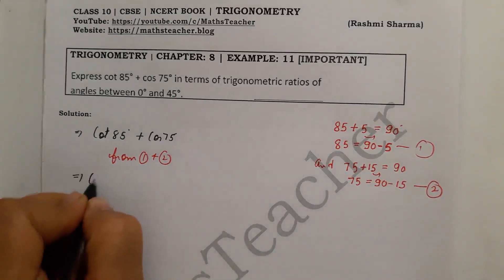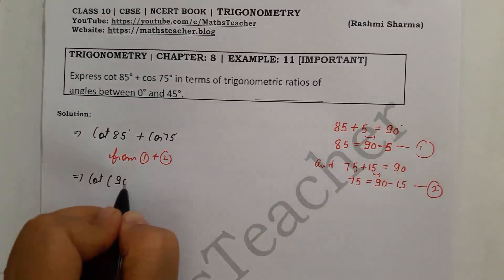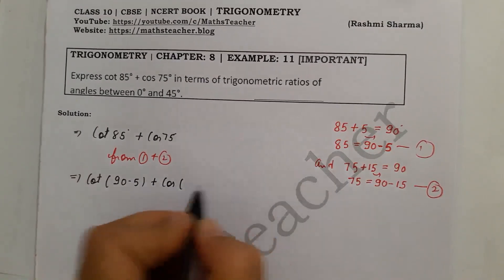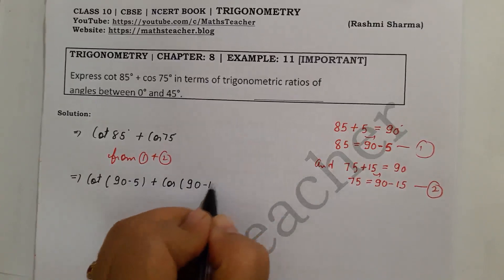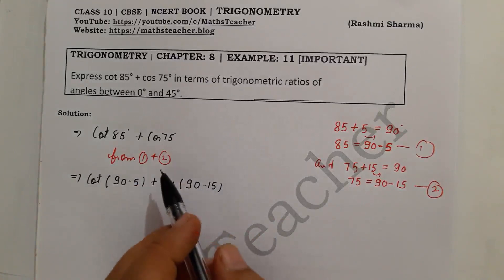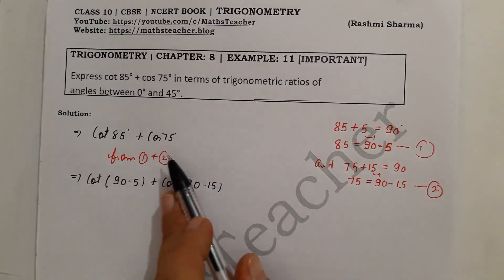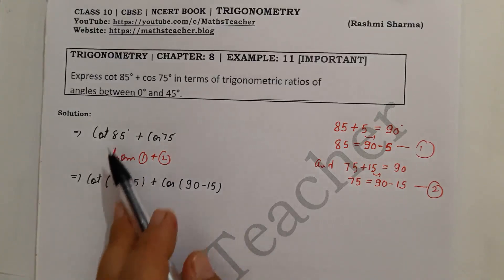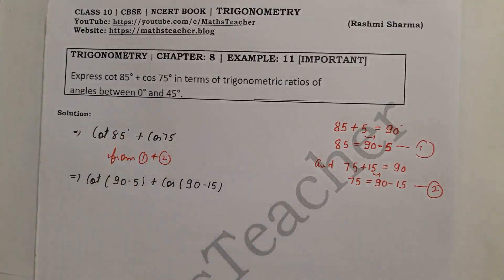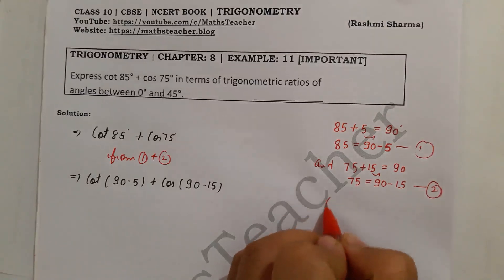We rewrite the expression: cot(90° − 5°) plus cot(90° − 15°). Since 90° minus 5° equals 85° and 90° minus 15° equals 75°, there is no change in value — this equation is equal to the original. Now we apply the complementary angle identities.